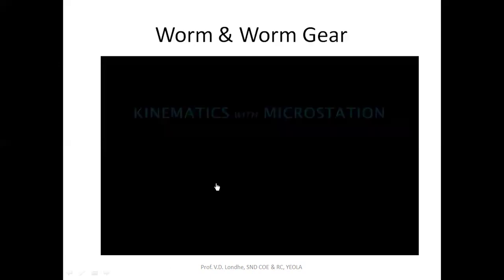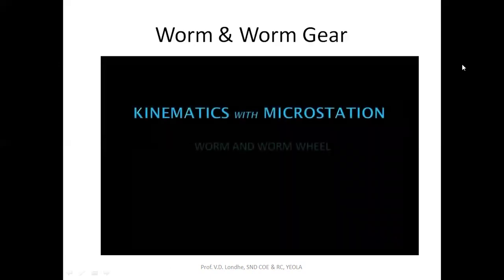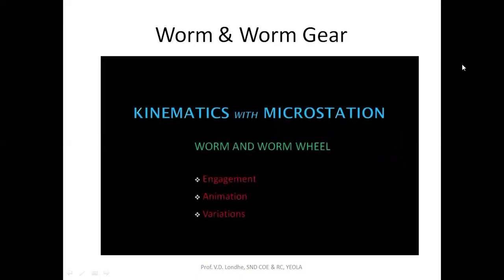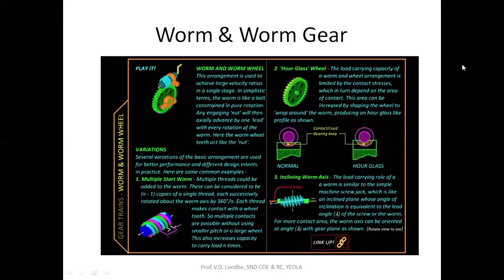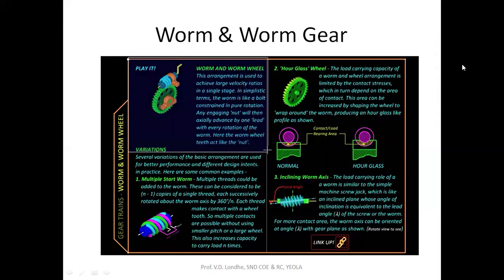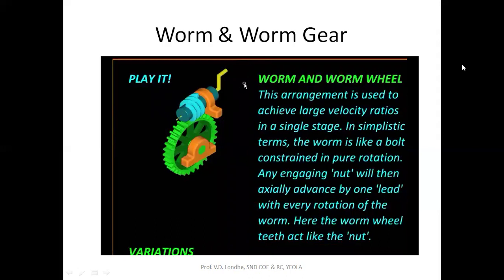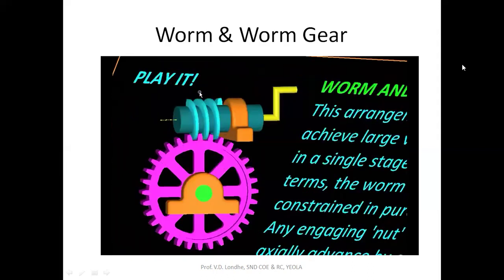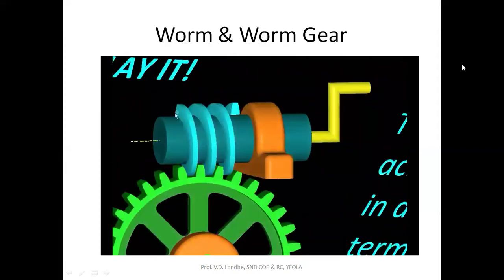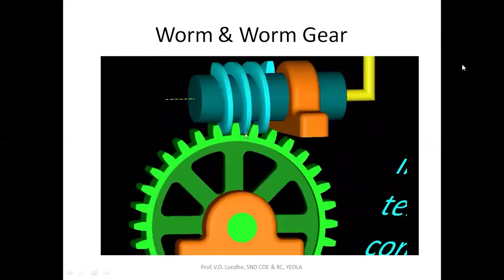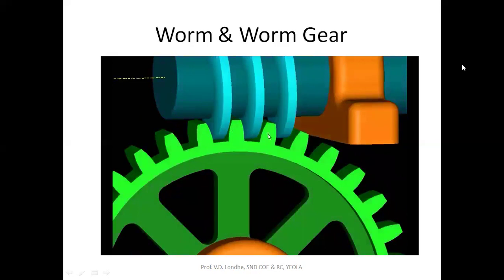We have seen simple and compound gear trains as well as epicyclic gear trains. Now we will look at an arrangement that allows a large velocity ratio or large gear reduction in a single stage. This arrangement is called the worm and worm gear. It essentially consists of a spur gear shown in green engaging with what looks like a large bolt — it is called the worm. The light blue thread of the worm is engaging with the teeth of the spur gear.